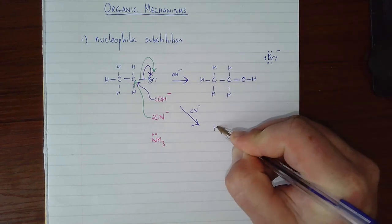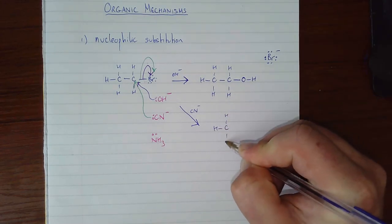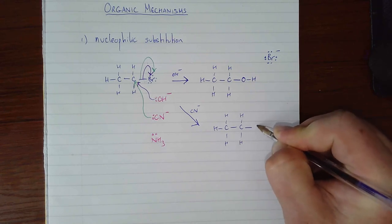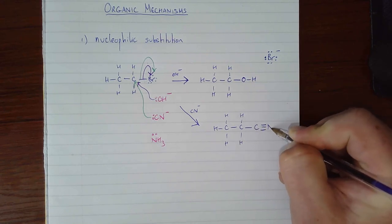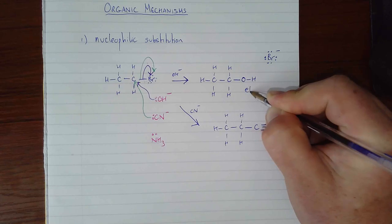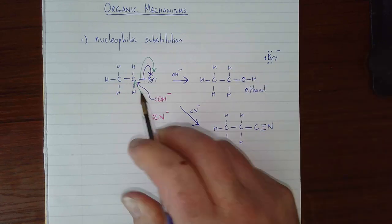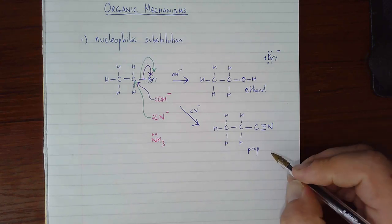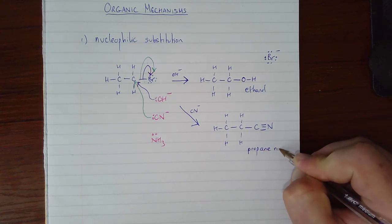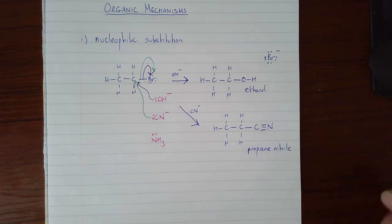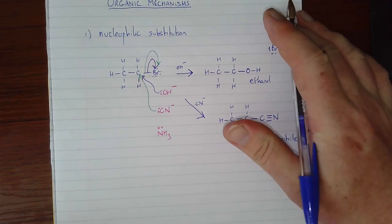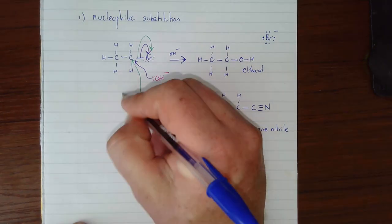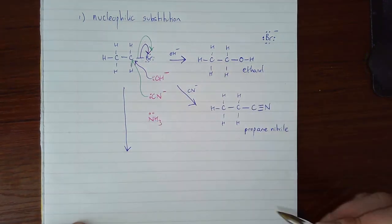If cyanide came along instead, the mechanism would look exactly the same. Forms a bond, breaks exactly the same. Rather than having an alcohol form which is what hydroxide would give you, because we're using cyanide, we've grown the carbon skeleton. It's now three carbons long, so whereas that there is ethanol from bromoethane, this is now propane nitrile.